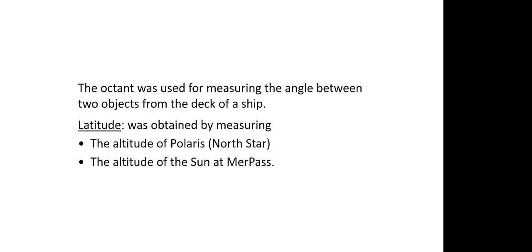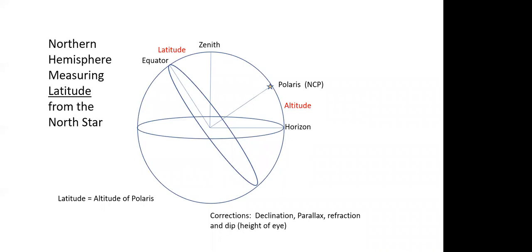So how did it work? Here you see a circle in the northern hemisphere showing how latitude is obtained from the north star. The vertical circle is the plane of the observer's meridian. The observer is right in the center of the diagram, and right above his head is a point called the zenith. Ninety degrees to the zenith, looking left and right, you will see the horizon. The distance between the zenith and the equator corresponds to the observer's latitude.